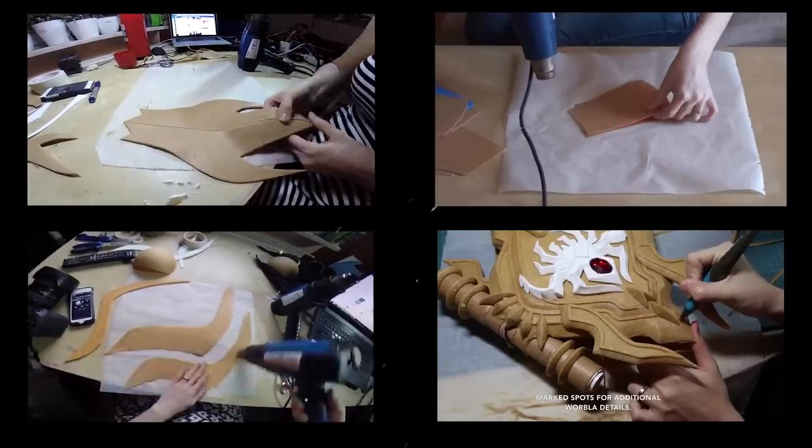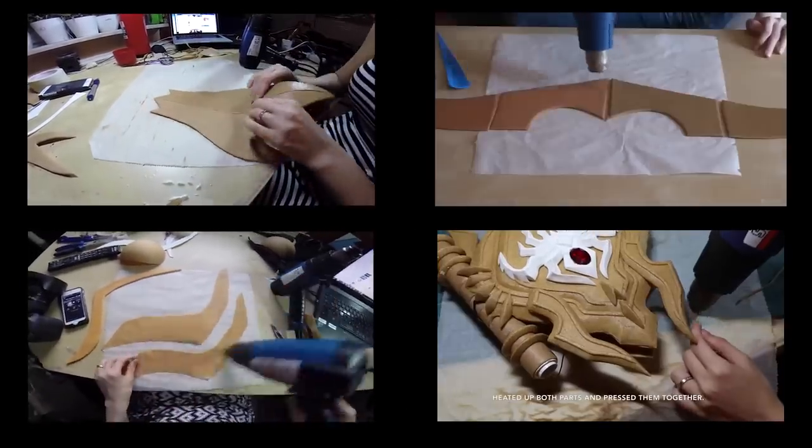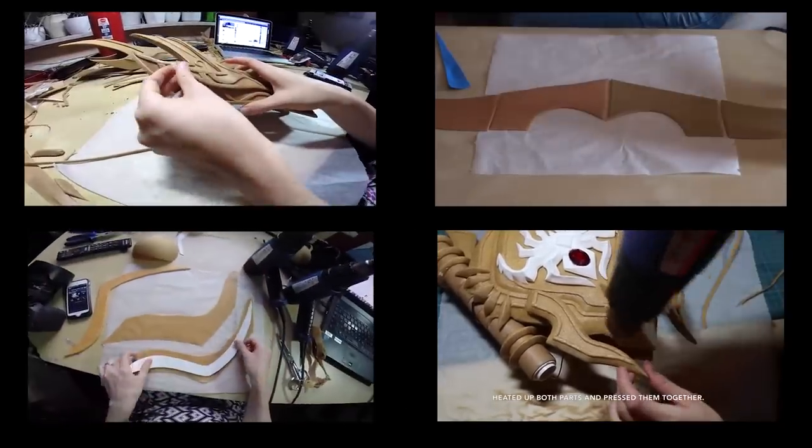You can do many cool things with normal warbler - stuff like bracers, helmets, swords, and even glowing magical books. Warbler is a thermoplastic material that becomes flexible when you heat it up and solid when it cools down again.